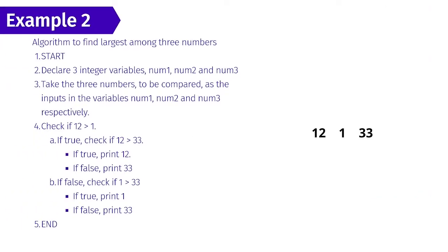Now let's walk through example two with actual values. We have three numbers as input: 12, 1, and 33, stored in num1, num2, and num3 respectively. We check if num1 is greater than num2 — that is, if 12 is greater than 1 — which is true. Then we check if num1 is greater than num3 — that is, if 12 is greater than 33 — which is false. Hence we print 33, which is the largest among the three numbers. That is the end of this algorithm.